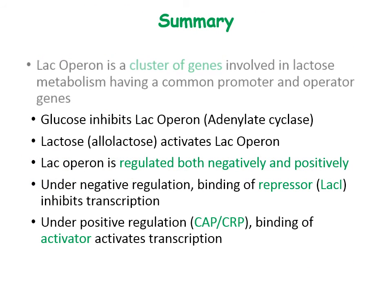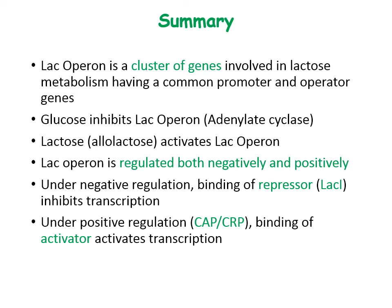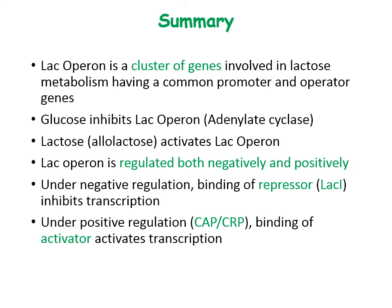To sum up: the LAC operon is a cluster of lactose metabolism genes with a common promoter and operator. Glucose inhibits the LAC operon by inhibiting adenylate cyclase, while lactose or allolactose activates it. The LAC operon is regulated both negatively and positively — under negative regulation, binding of the repressor inhibits transcription; under positive regulation, CAP or CRP activator binding activates transcription.